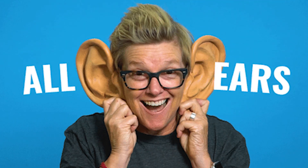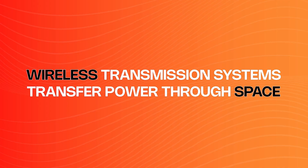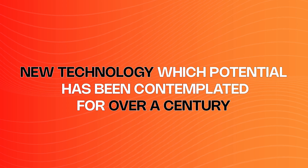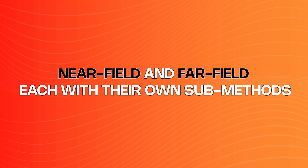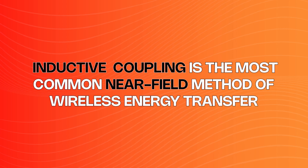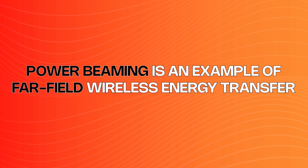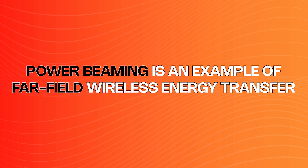Let's do a quick recap to sum things up. Wireless transmission systems transfer power through space. It is a relatively new technology, but its potential has been contemplated for over a century. Wireless transmission can be separated into two categories — near field and far field — each with their own submethod. Inductive coupling is the most common near field method of wireless energy transfer, and power beaming is an example of far field wireless energy transfer.